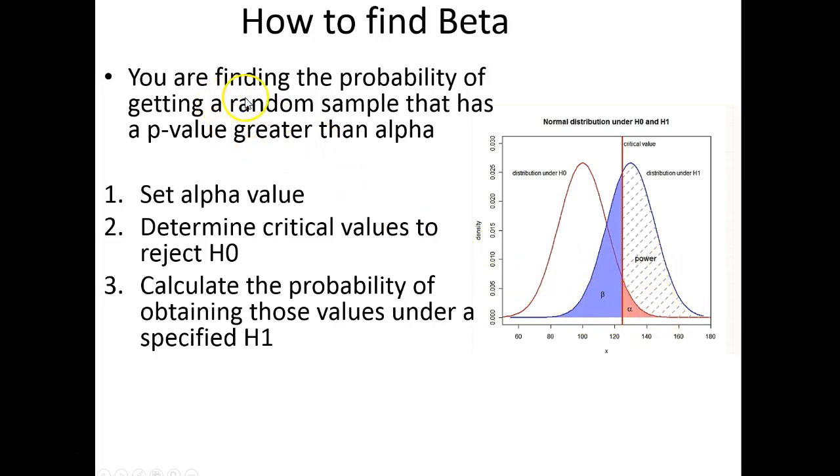So what I want to do is I want to find the probability of getting a sample that has a p-value greater than alpha. I know right here that this is my cutoff. So if my p-value is smaller than alpha, I'm in this range. I'm fine.